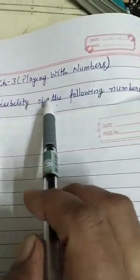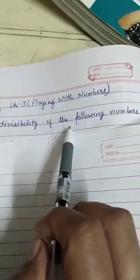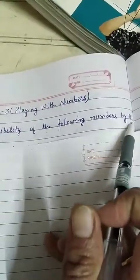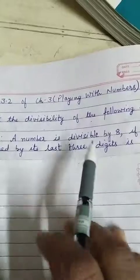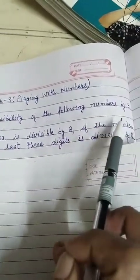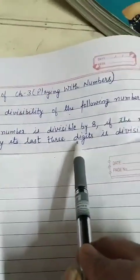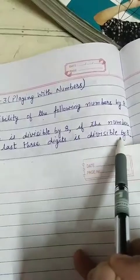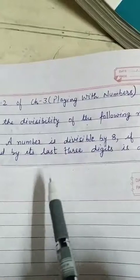Question number 6: Test the divisibility of following numbers by 8. Now, we will check the divisibility of the given number by 8. The rule is, a number is divisible by 8 if the number formed by its last three digits is divisible by 8. The meaning is that, suppose that a number is given to you.